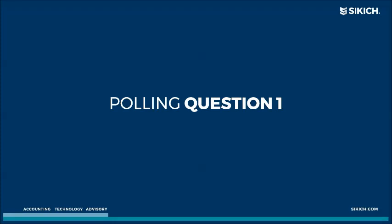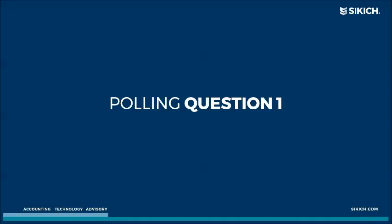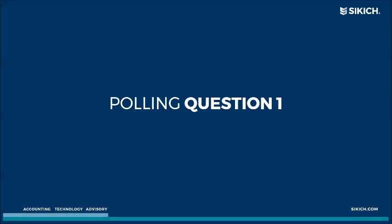This presentation is eligible for CPE credit, which requires polling questions. To keep it light and within the holiday spirit, we're using holiday-themed questions rather than drilling you on technical issues. First question: approximately how many pounds of candy corn are produced each year — 5 million, 15 million, 35 million, or 50 million? Most folks felt it was about 15 million, but the answer is actually 35 million.